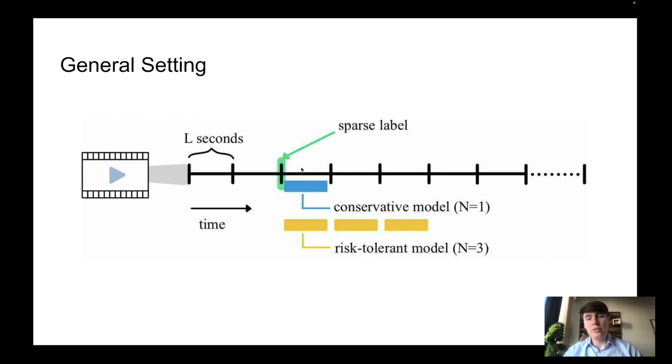So what you can do in that case is you could sample as positive a little sub-clip that just follows your sparse start label and have a conservative model using only that as positive for training. Or you could sample more samples further away from that sparse label as positives and use that with a risk-tolerant model for your training.